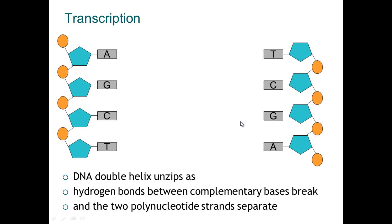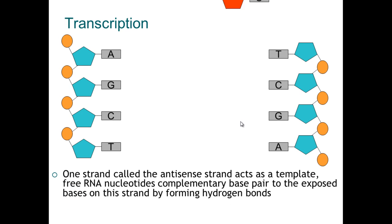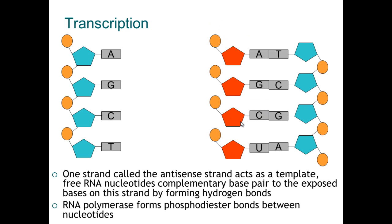So what happens when a protein is to be made? The two strands of DNA unwind and there is another chemical called RNA. In this case it is called messenger RNA, and that comes in and binds to one of the strands of DNA. And again, it has got these complementary base pairs.